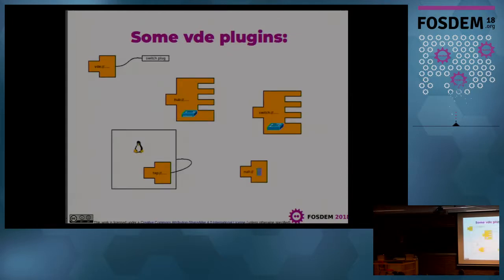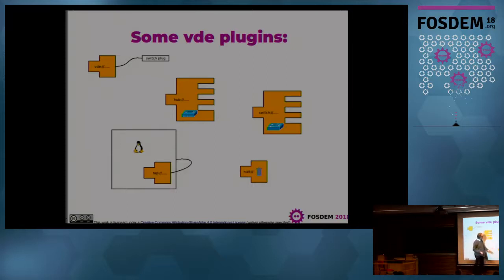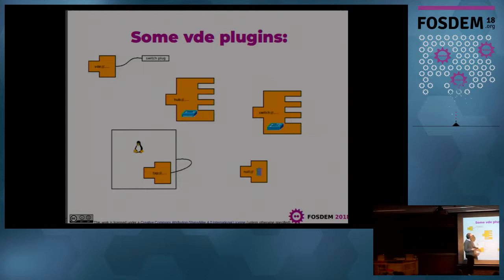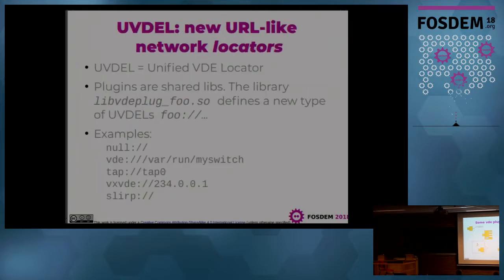You can have a plugin that connects to a virtual switch, a plugin that is a hub, a plugin that is a switch, or a plugin which is null — like /dev/null — which is very useful because you can use it to change the behavior of different tools. You can also have a TAP plugin to connect the virtual world to the real world by creating a virtual TAP interface. The new idea is that you can load and use each kind of plugin using a descriptor locator.